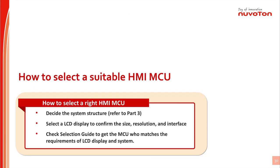In Part 3, the topic is how to select a suitable HMI microcontroller. Engineers could follow three steps: first, decide the system structure; second, select an LCD or OLED display to confirm the size, resolution, and interface; third, check the selection guide to get the microcontroller that matches the display and system specification requirements.